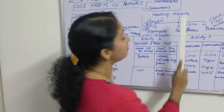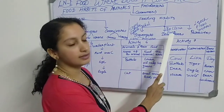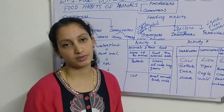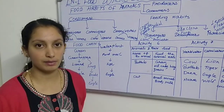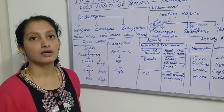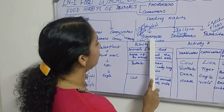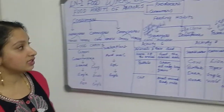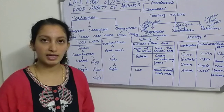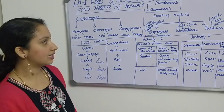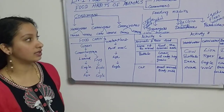Next, moving to the important topic of feeding habits. Based on feeding habits we have three groups: scavengers, decomposers, and parasites. The first two help us clean the environment by dealing with dead bodies of animals or dead remains of plants. Scavengers are either carnivorous or omnivorous and eat the dead remains of plants or animals. Examples are crow, vulture, hyena, and jackal.